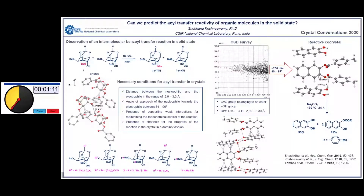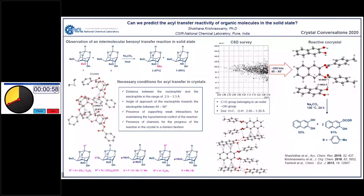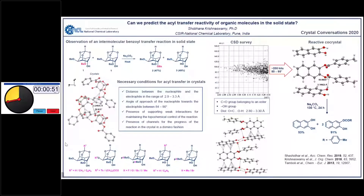The molecules in these crystals arrange in the form of layers. In each layer, the diester molecules are sandwiched between pairs of hydrogen-bonded diols, and the assembly is supported by C–H···π interactions between the co-crystal formers. This assembly brings the electrophile and nucleophile close enough for the reaction and also helps in the propagation of the reaction through the crystals. We felt confident that this system would show acyl transfer reactivity in the solid phase.